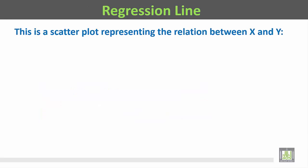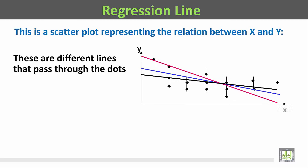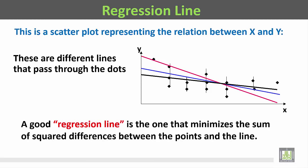This is a scatter plot representing the relationship between x and y. النقاط المبعثرة تعبر عن العلاقة بين المتغير المستقل والمتغير التابع. There are different lines that can pass through the dots. يمكن رسم العديد من الخطوط التي تمر من خلال هذه النقاط.